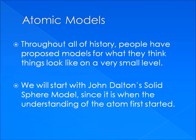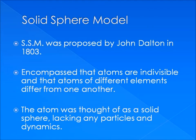The final part of this short lecture involves different models of the atom throughout history. We'll begin with Dalton's solid sphere model. This model was proposed by Englishman John Dalton in 1803 and made the large assumption that atoms are indivisible and that atoms of different elements differ from each other. He essentially postulated that atoms were spheres, and he was not entirely wrong. Unfortunately, problems arose with this model and it was replaced.